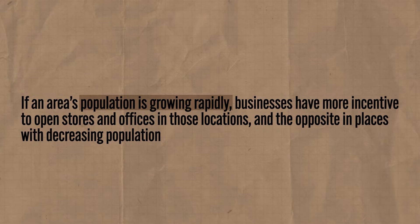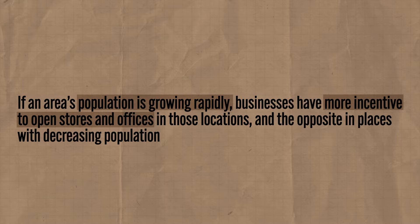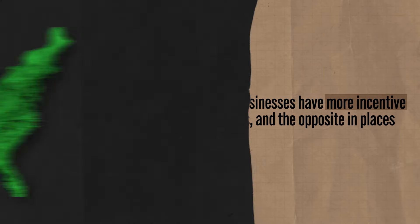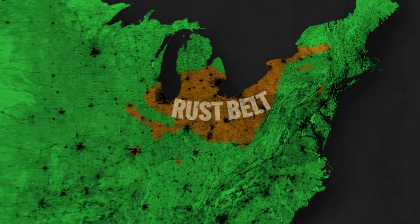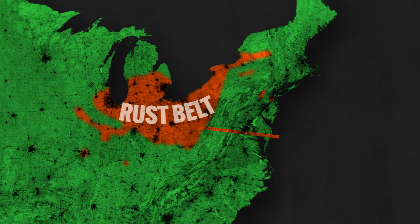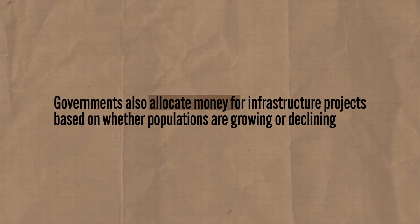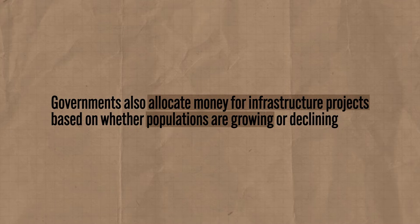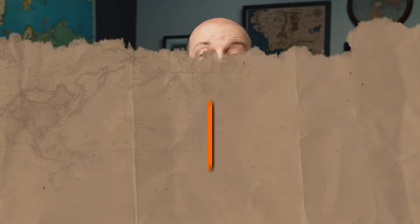Population distribution and density numbers also affect economic processes — how money is spent for both public and private services. If an area's population is growing rapidly, businesses have more incentive to open stores and offices there. The opposite is true in places with decreasing population. For example, the Rust Belt used to be an economic powerhouse in the United States focused on manufacturing, but around the 1950s manufacturing jobs were increasingly sent to other countries. People lost their jobs, the factories got rusty, and these regions experienced a shrinking population. Governments also allocate money for infrastructure — roads, bridges, hospitals, and schools — based on whether populations are growing or declining.